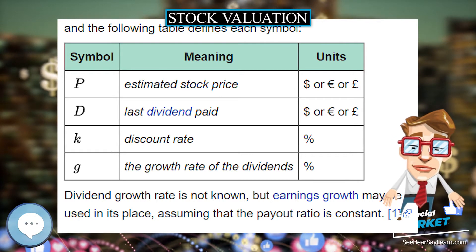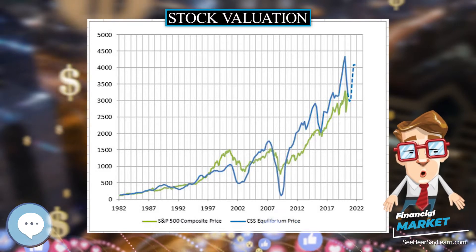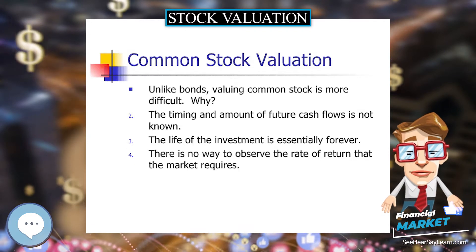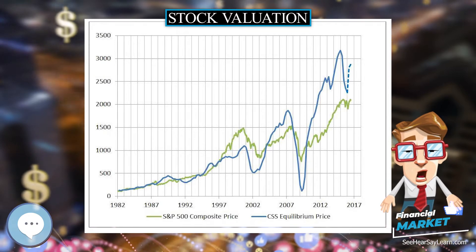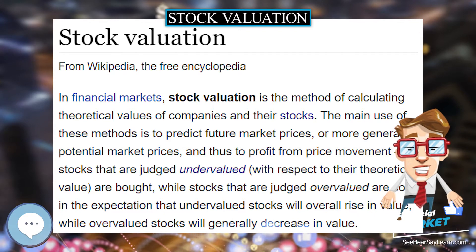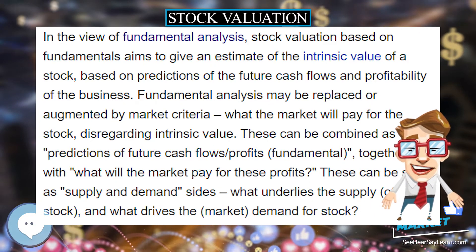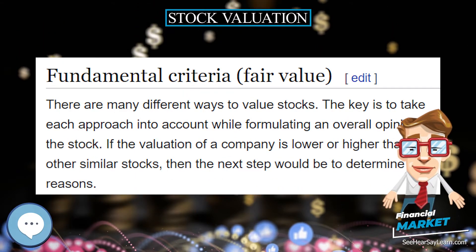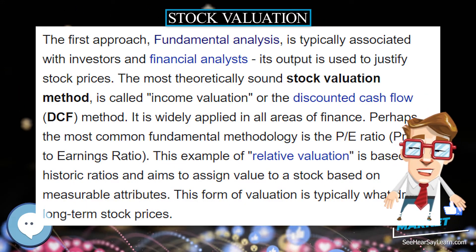In July 2010, a Delaware court ruled on appropriate inputs to use in discounted cash flow analysis in a dispute between shareholders and a company over the proper fair value of the stock. In this case the shareholders' model provided a value of $139 per share and the company's model provided $89 per share. Contested inputs included the terminal growth rate, the equity risk premium, and beta.